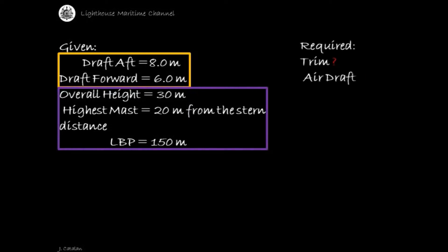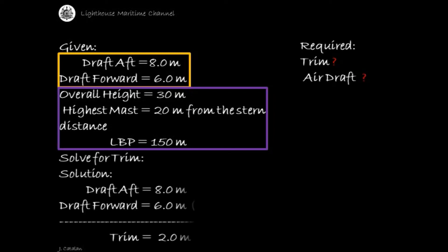Required: trim and air draft. Solve for trim. Solution: draft aft (8.0 meters) subtracted by draft forward (6.0 meters). The result is the trim, which is equal to 2.0 meters.